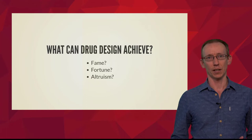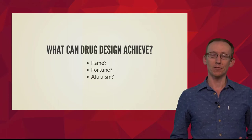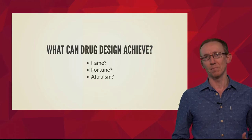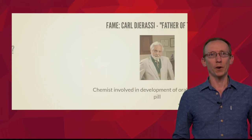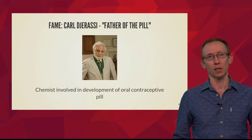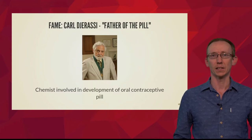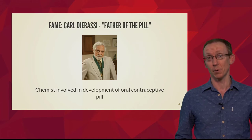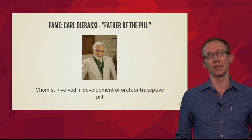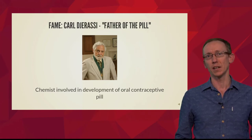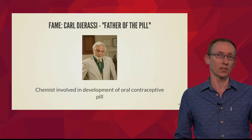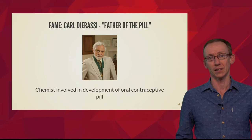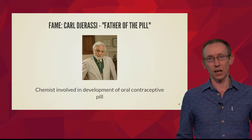So what can we achieve through drug design? Is it fame that interests you, or are you more interested in fortune? Or do you have altruistic interests - do you want to change the world? The first of these, fame, can be illustrated through one of the most famous chemists of the last century, Carl Djerassi. He's known as the father of the pill - the birth control pill. He was a chemist involved in the development of the oral contraceptive pill, which really changed society in the 1960s. Now these slides, if you go to them online, you'll find that they're three-dimensional.